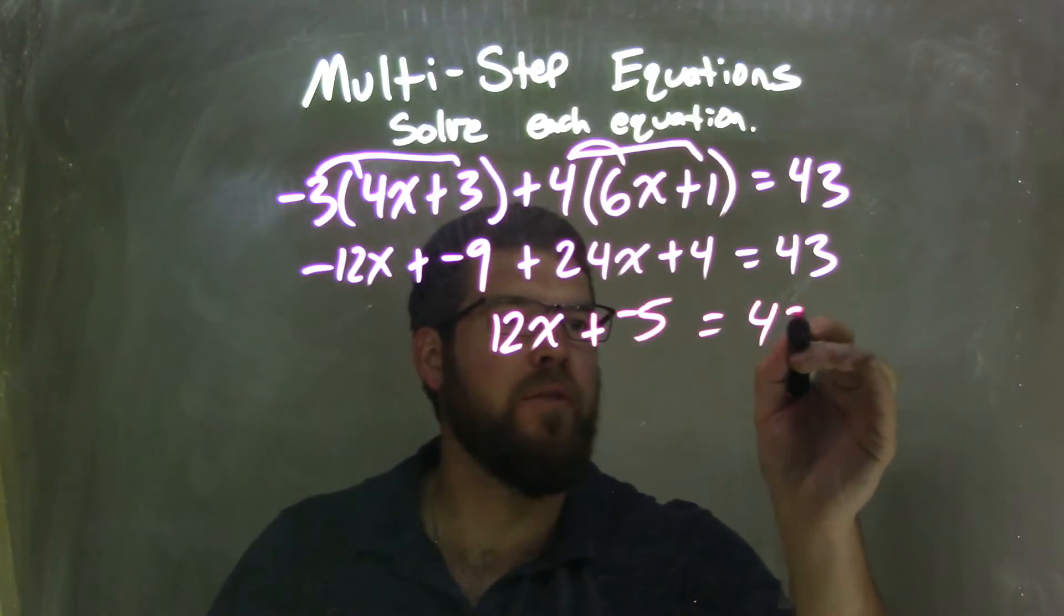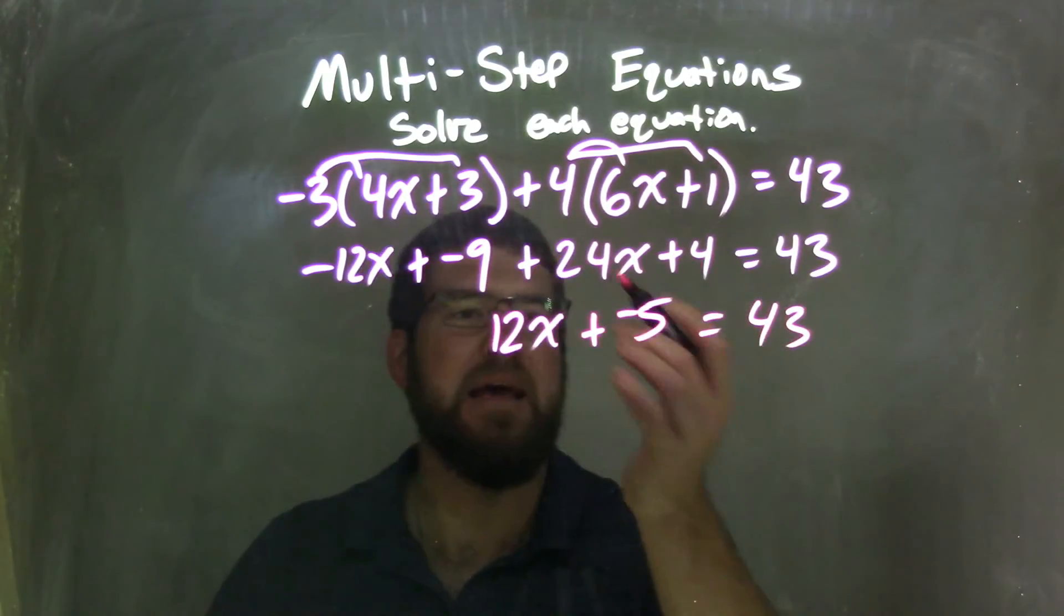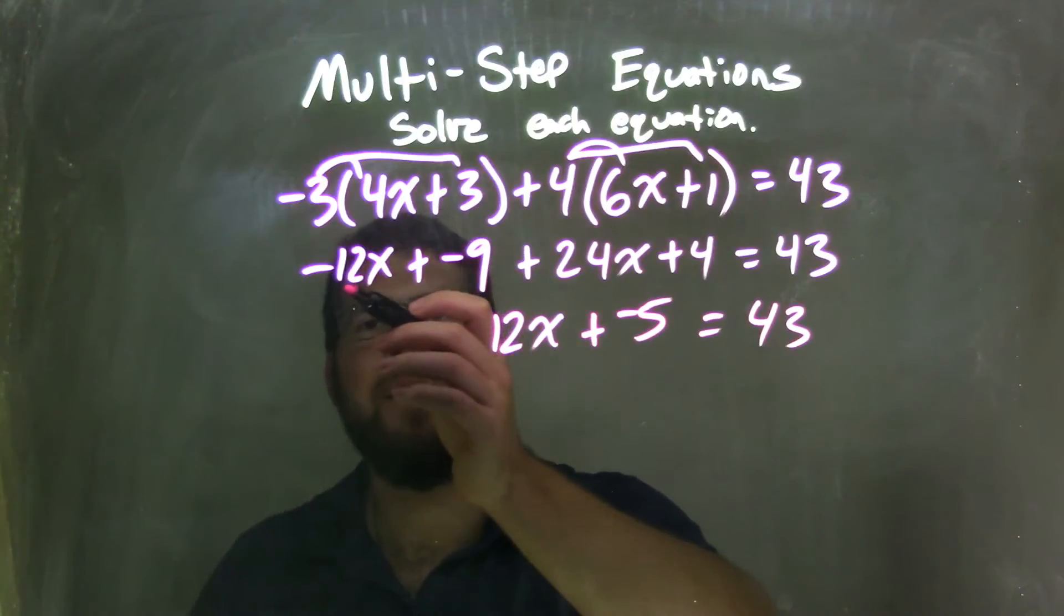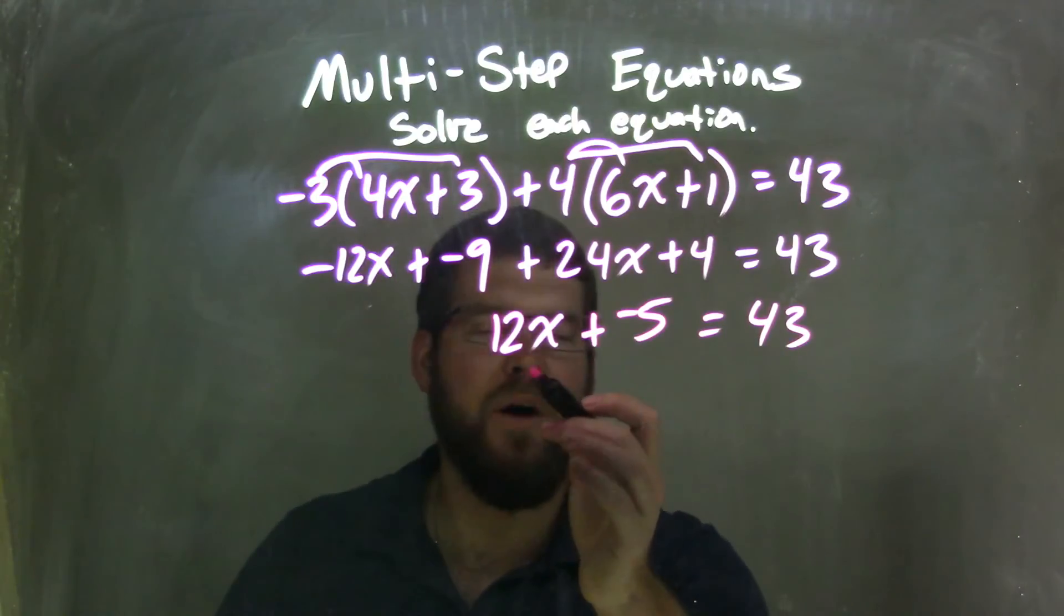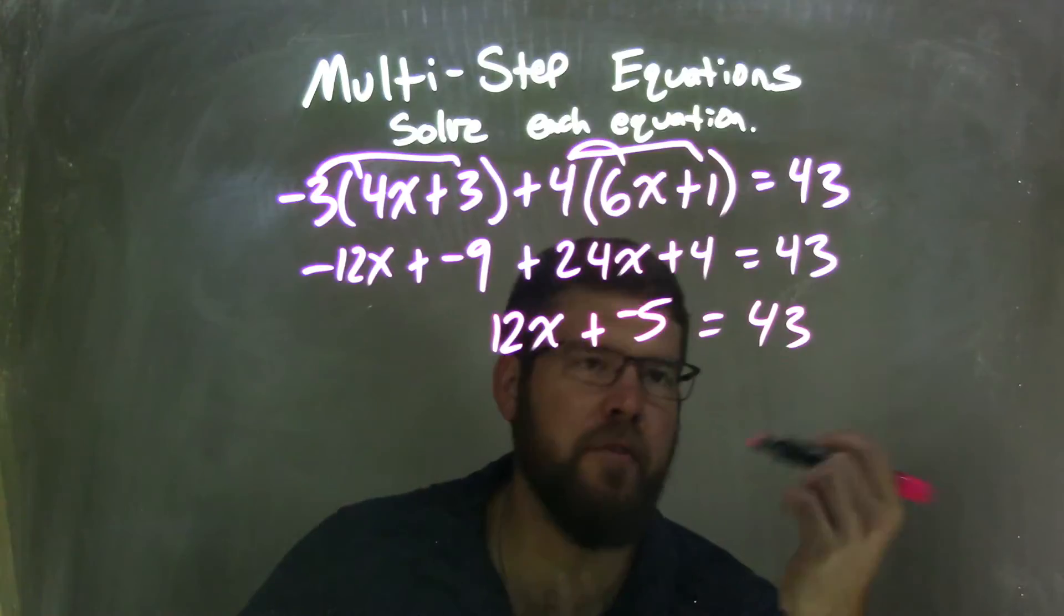Combining them, I'm going to have 43 over here. So 4 and negative 9 is negative 5. 24 and negative 12 is positive 12. So we have 12x plus negative 5, or minus 5.